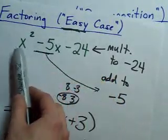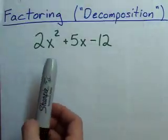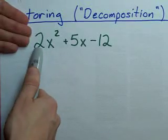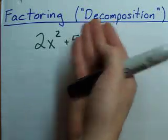Remember the easy case was when you just have a bare x squared out front. Ew, no, it's not just x squared out front. There's a 2 there. Well, that's crap. I guess we're going to have to use decomposition.